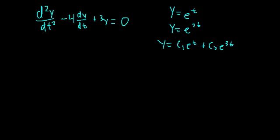What I want to talk about in this video is: why is this the case? Why is the general solution a linear combination, and how does that result from the property of linearity of the differential equation? So let's get started. We know that y equals e to the t is a solution to this differential equation — it satisfies it.